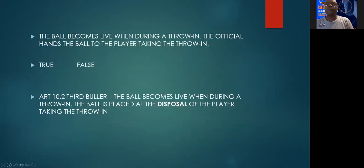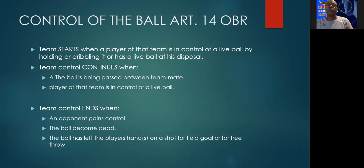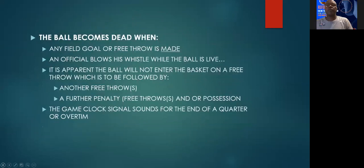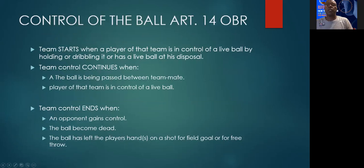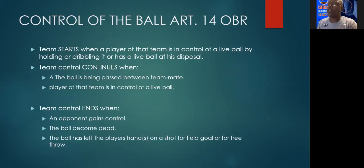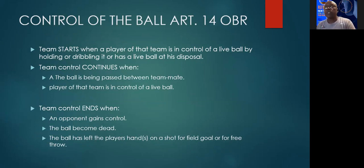Article 14. We indicated yesterday that once a referee or official masters these two rules together with one or two others, they can literally pass an exam getting a mark of about 80%, because all of the rules are centered around status of the ball and control of the ball. Having said that, the definition for team control: team control starts when a player of that team is in control of a live ball by holding or dribbling it, or has a live ball at his disposal. Having a live ball at his disposal — you can use that on a throw-in. The ball becomes live when placed at the disposal of the free throw shooter or the person taking the throw-in.